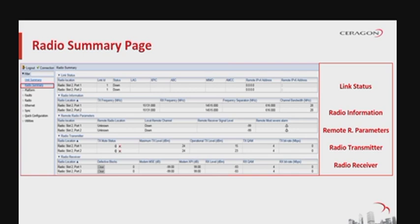The radio summary page includes link status per radio carrier — whether the link is up, groups to which the link is assigned such as LAG, X-pick, protection, or multi-carrier ABC, and the IPv4 and IPv6 address of the remote carrier. Radio information includes the TX and RX frequencies, frequency separation, and channel bandwidth on which the link is operating.